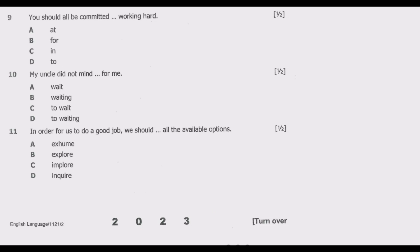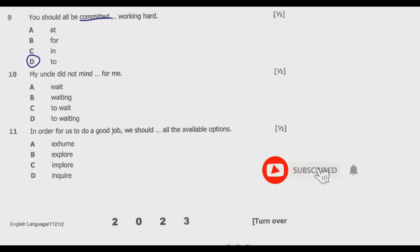Question nine: 'You should all be committed ___ working hard.' Options: A: at, B: for, C: in, D: to. The best answer is D — to. It reads: 'You should all be committed to working hard.' The adjective 'committed' is typically followed by 'to' when referring to dedication or obligation towards something. Hence D is the correct answer.